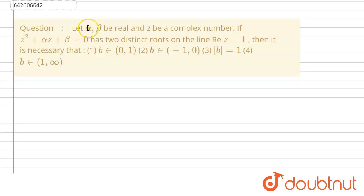Hello everyone, so the question is: alpha, beta are real and z be a complex number. If z square plus alpha z plus beta equals 0 has two distinct roots on the line where real part of z equals 1, then it is necessary that...